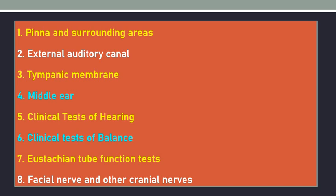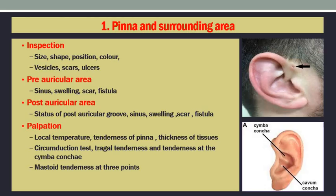To start with the pinna and its surrounding areas: first, we have to inspect the pinna for its size, shape, position, and color. Then we have to look for vesicles, scars, and ulcers in the pinna — both lateral as well as the medial aspects are to be examined. Then the pre-auricular area has to be seen for sinus, swelling, scar, and fistula.